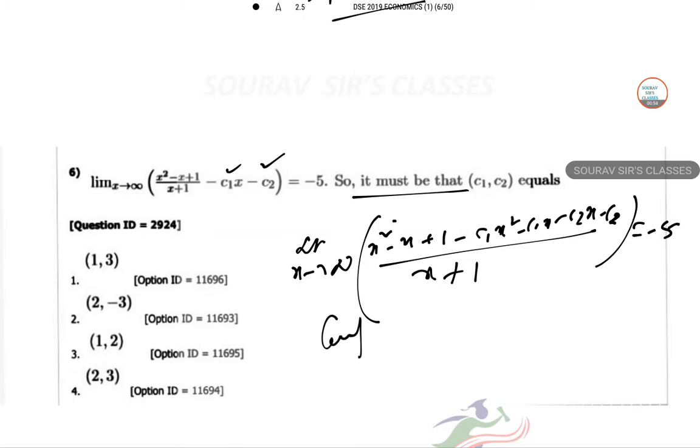So the coefficient of x square, all the things will be gone, then only it will be coming. So 0 coefficient of x square and the coefficient of x will be minus 5. So this gives C1 equal to 1, C2 equal to 3. 1, 3 is the combination, option 1 is correct. Let us proceed to the next one.